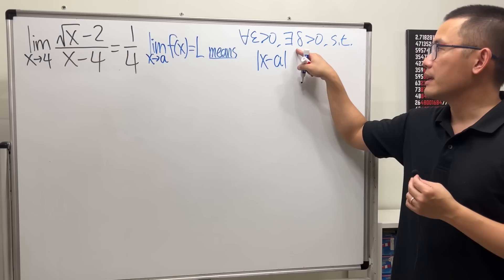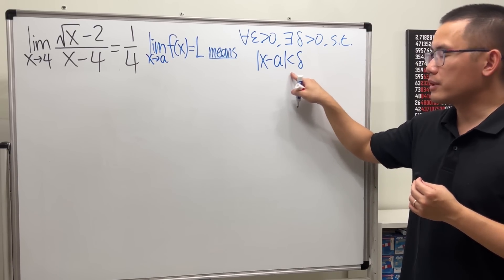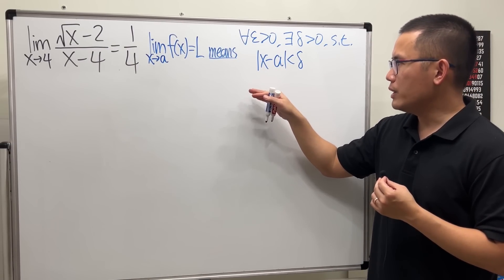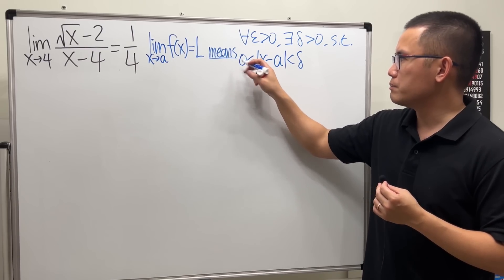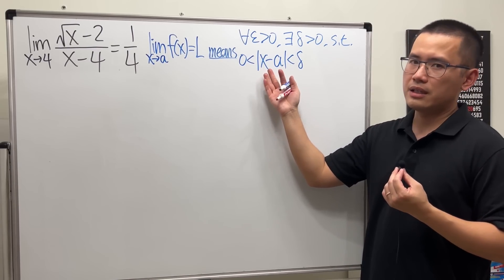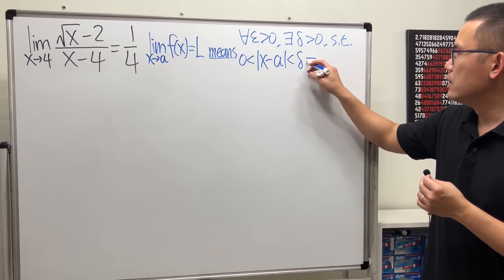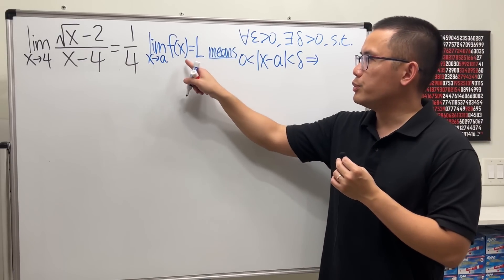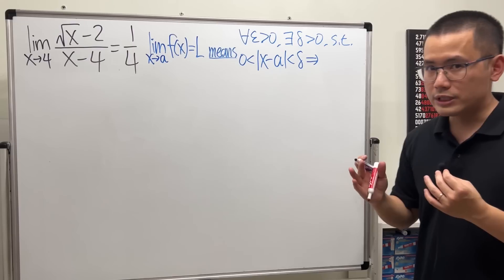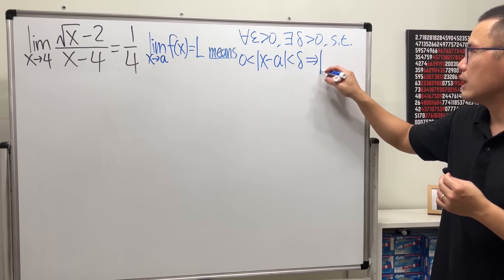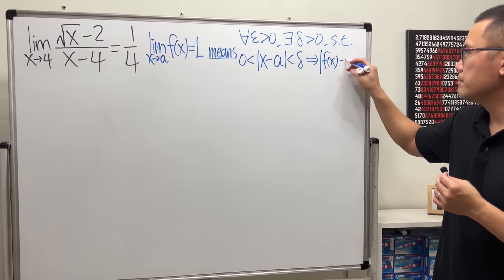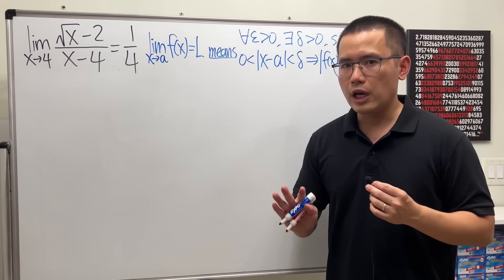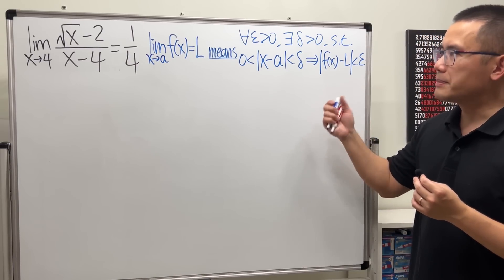We want that distance to be less than delta, and we don't want x to equal a — we ensure the absolute value is always positive so x cannot equal a. Once we have this, we get the implication that the distance between the function and the limit is also small enough, meaning the absolute value of the function minus L is less than epsilon. Now here are the four keywords that help you write a nice epsilon-delta proof.